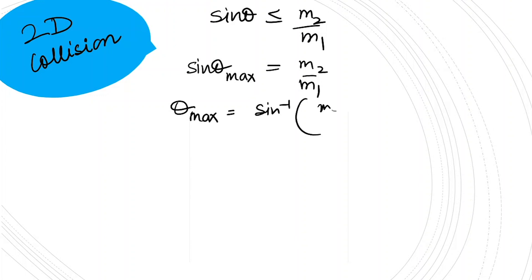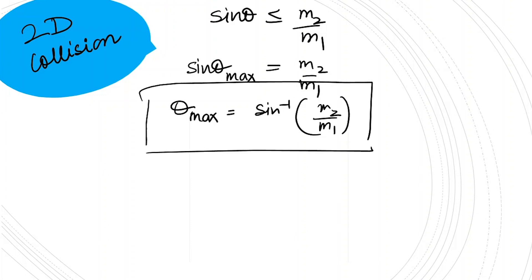For the maximum value of theta, we use the equality sign: theta_max = sin⁻¹(m2/m1). This is our expression for the maximum value of theta. If you have any doubts related to this topic, write in the comment box. If you find this video helpful, please like, share, and subscribe to my channel. Thank you for watching.